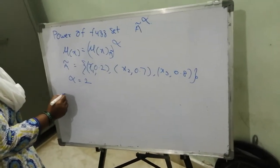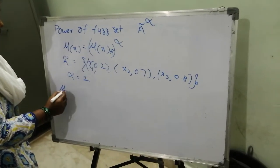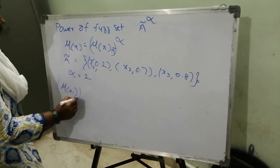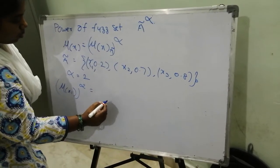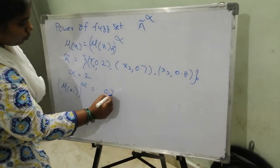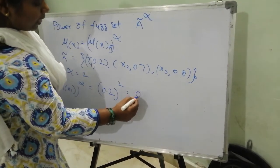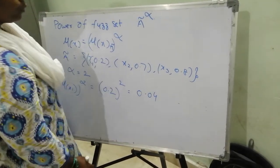So membership value of x1 raised to alpha equals 0.2 to the power of 2. Then the answer is 0.04.